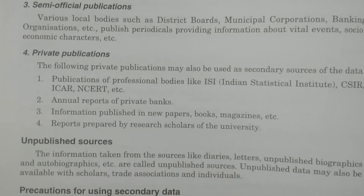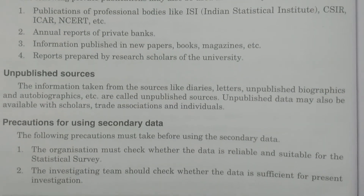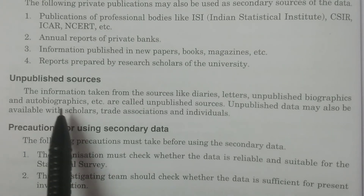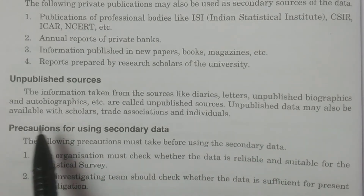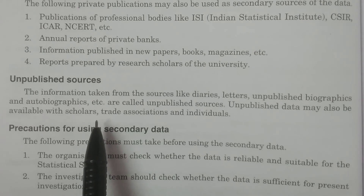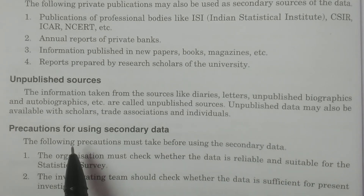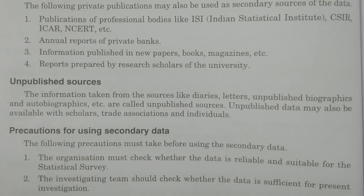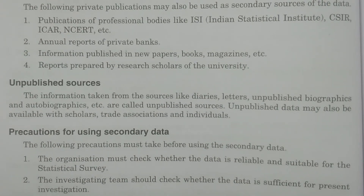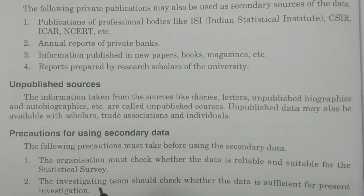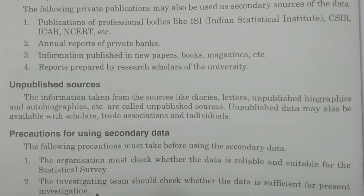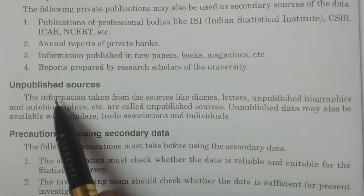Now, coming to unpublished sources. Unpublished sources means information taken from sources like diaries, letters, unpublished biographies, autobiographies, etc. The data may be available with some scholars, trade associations, or individuals — these also fall under unpublished sources. After collecting the data, if it was not published, such kind of data is known as unpublished sources. These are the two important sources of secondary data.